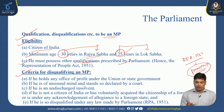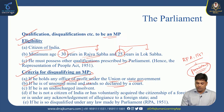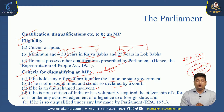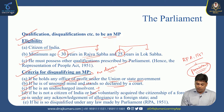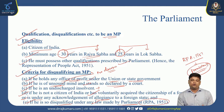Criteria for disqualifying an MP: if he holds any office of profit under the union or state government; if he is of unsound mind as declared by a court; if he is an undischarged insolvent (bankruptcy); if he is not a citizen of India or has voluntarily acquired citizenship of a foreign state; or if he is disqualified under any law made by Parliament, such as RPA 1951.